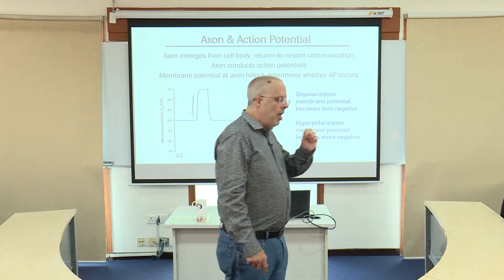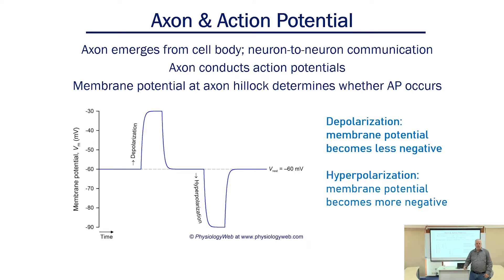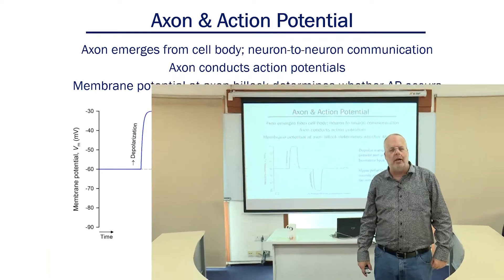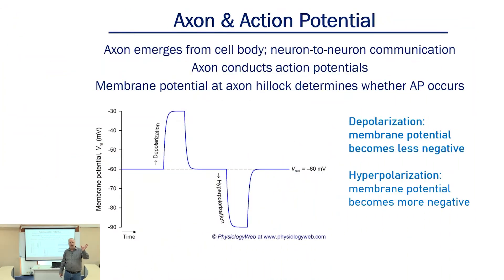If we have a hypothetical neuron and its interior is negative 60 millivolts, if we make the interior less negative — i.e. more positive — the term for this is depolarization. The inside is depolarizing, going from negative 60 to negative 50, negative 40, etc. Alternatively, if we make the inside more negative, going from negative 60 to negative 70, the term for that is hyperpolarization. Depolarization: less negative. Hyperpolarization: more negative.